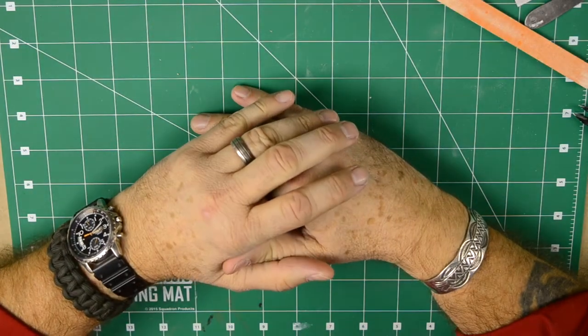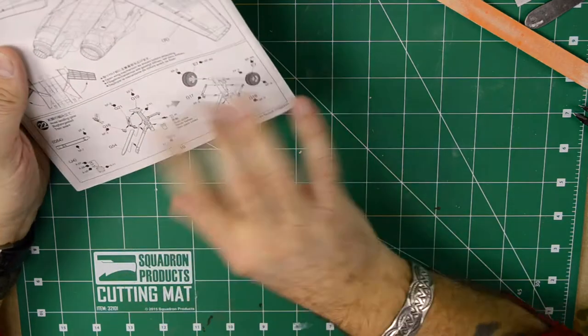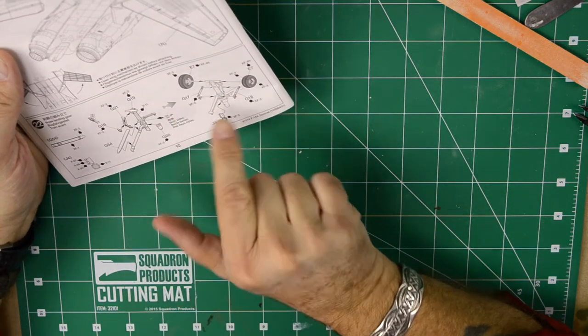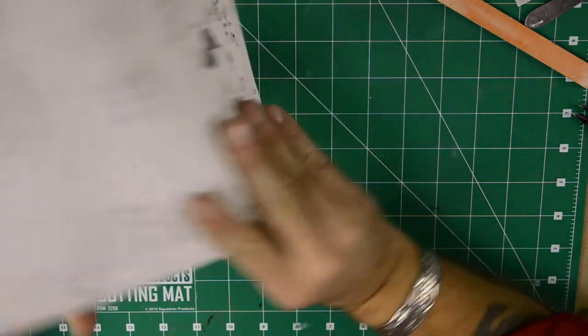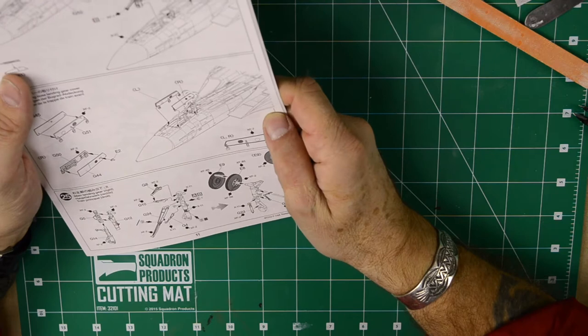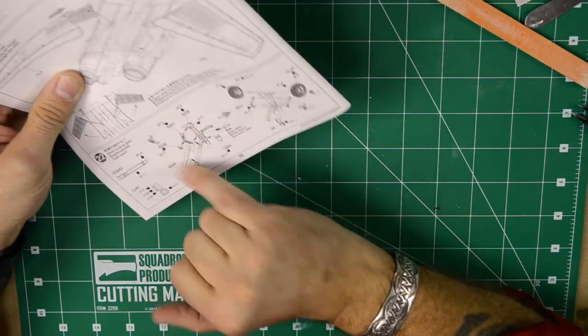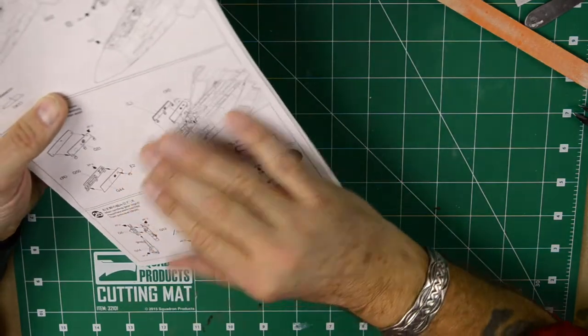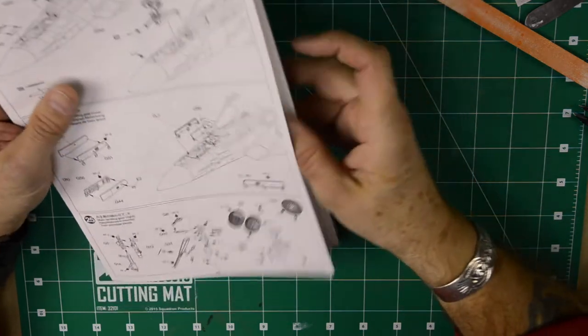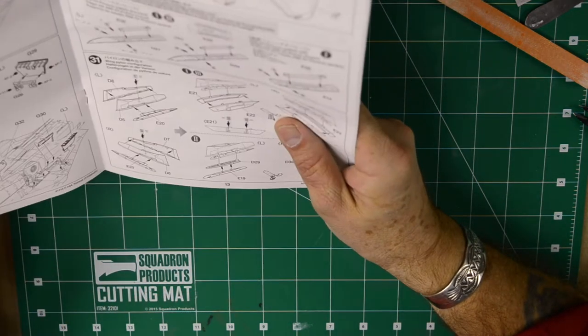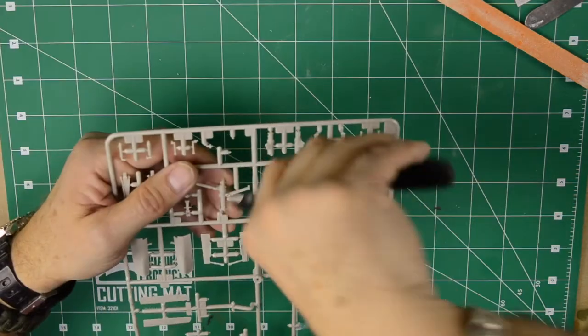All right, welcome back guys. In today's session we're going to do the landing gear, so we're going to prepare all the pieces for painting. I'm not going to do anything with the wheels because I decided to use aftermarket wheels from True Detail. I'm going to do everything as far as building the landing gear, cleaning the pieces, and the landing gear doors to make sure everything is ready for painting.